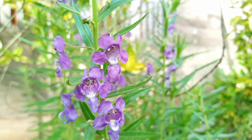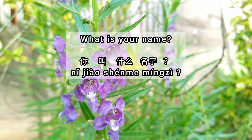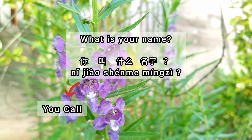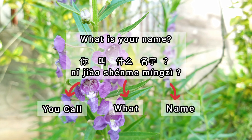If someone asks you, 你叫什么名字? That means 'what is your name?' 你叫 means 'you call.' 什么 means 'what.' 名字 means 'name.' So literally it is 'you call what name?' That is how to say 'what is your name' in Chinese Mandarin. 你叫什么名字?